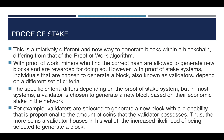In proof of stake, miners are peers chosen to form a block, and these miners are called validators. You might ask: how are validators chosen? In a proof of stake system, validators are chosen to generate a new block based on their economic stake in the network. If you have a higher stake in the network, there is a higher chance of you becoming a validator.